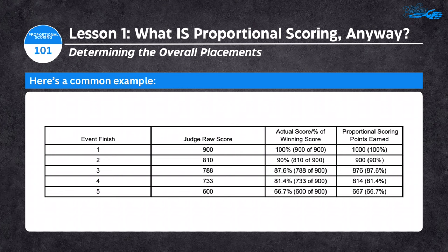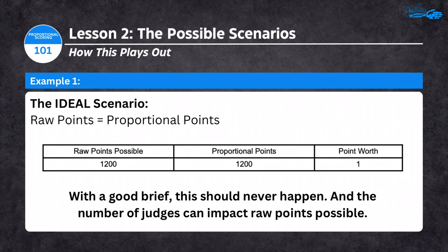Most groups stop there — they understand the winner gets a set number of proportional points per the SOP, and everyone else gets a percentage relative to the winner. But let's dive deeper into the possible scenarios. The ideal scenario — which will probably never happen — is when the raw points a team can earn equal the proportional points assigned by the SOP. In that case, every raw point a judge awards is worth exactly one point toward the overall championship.